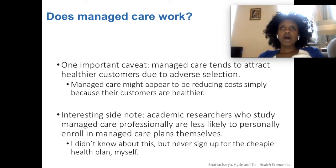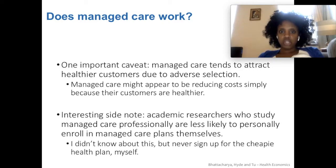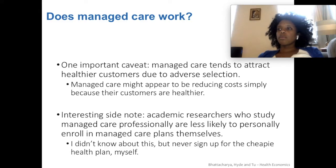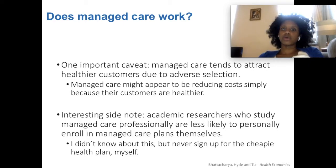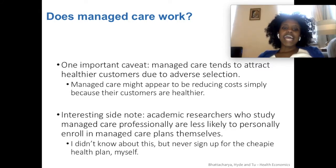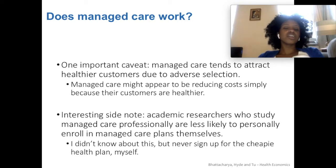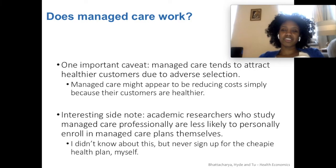The same selection bias is true in Medicaid — about 70% of Medicaid beneficiaries nationwide are enrolled in a Medicaid managed care plan. People who receive Medicaid due to a disability are generally not on managed care, while those who qualify due to low income are more likely to be administered through managed care. So it looks like it costs less, but those enrollees are also just healthier. As an interesting side note, academic researchers who study managed care are less likely to enroll in it themselves — and the instructor notes they personally prefer the most comprehensive coverage available.